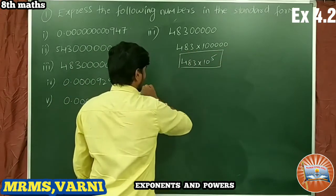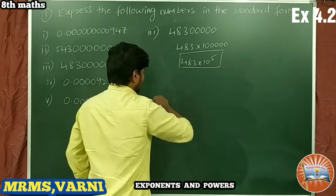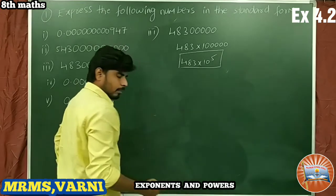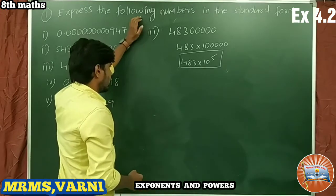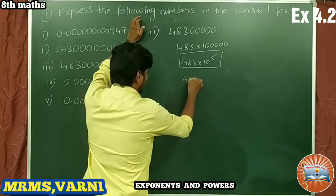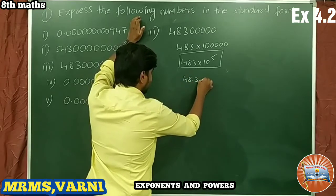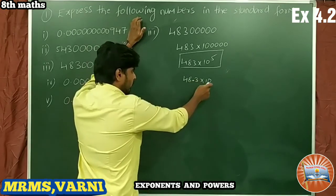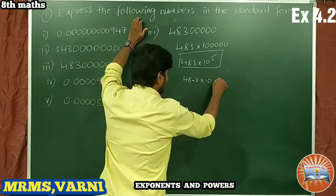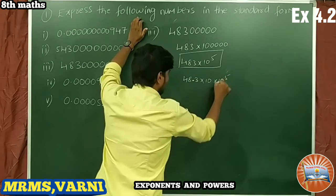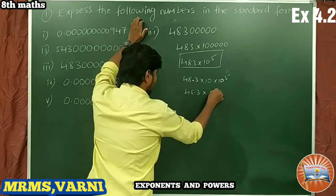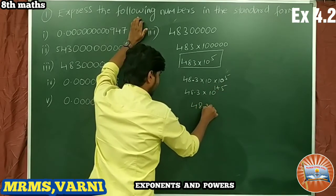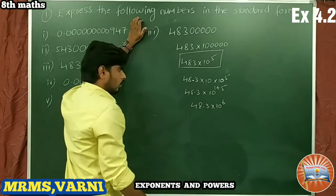We can stop there, but I will continue for clarity. Writing 48.3, we move the decimal point one place and multiply by 10, so it becomes 48.3 × 10^(1+5) = 48.3 × 10^6.